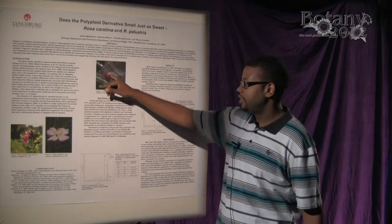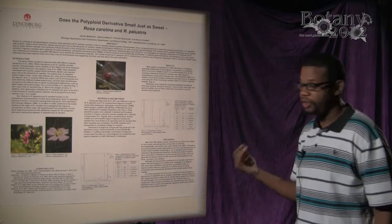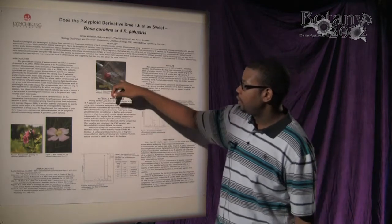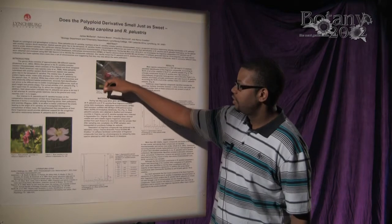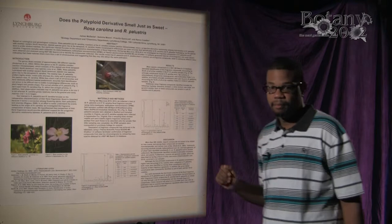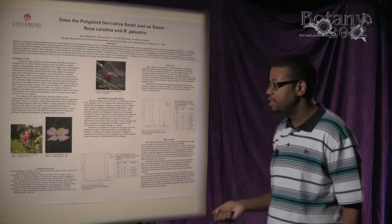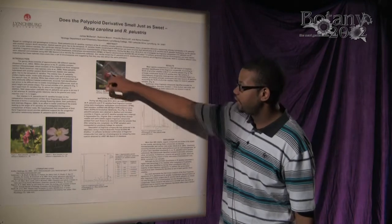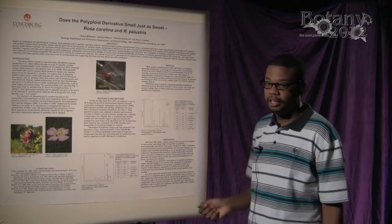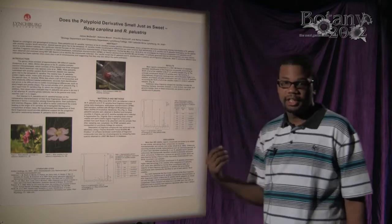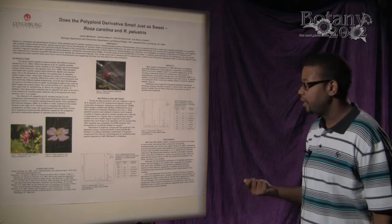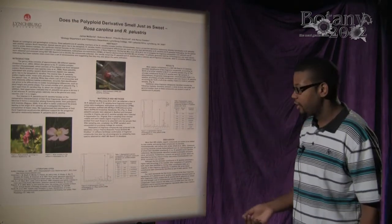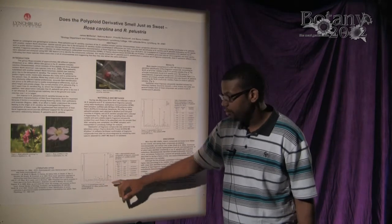The nice thing about the SPME sampling method is it only takes an hour to collect the volatile fragrances you need from any flowering plant. Once you've set it up, you let the sample run for an hour. After an hour has passed, you retract the resin tip to make sure no more contaminants come in contact with it, then take it to the lab. At the lab, you use gas chromatography — you inject the same sampler into the GC inlet, and the GC heats up to over 200 degrees Fahrenheit, burning off all those volatile fragrances.